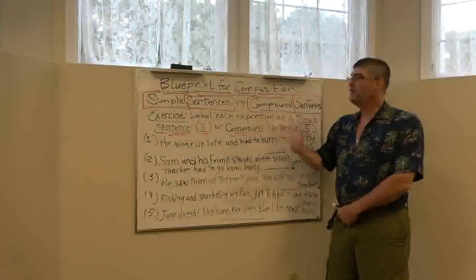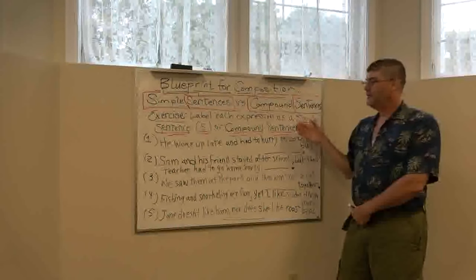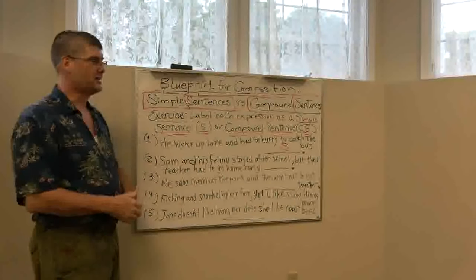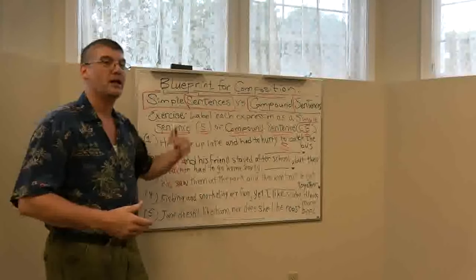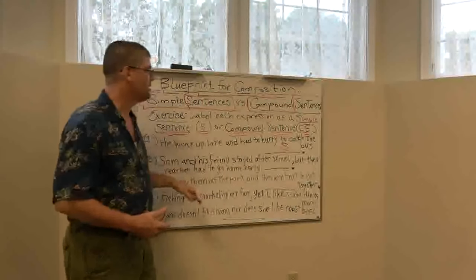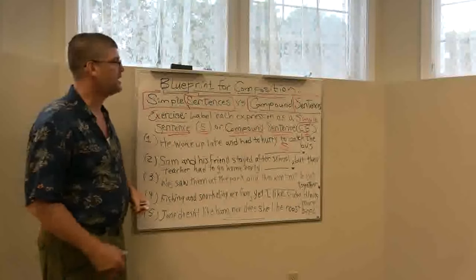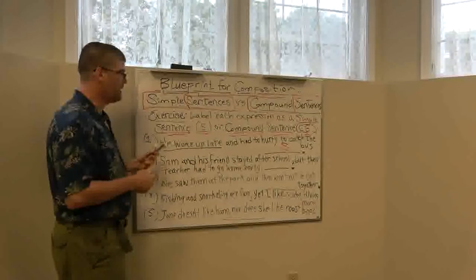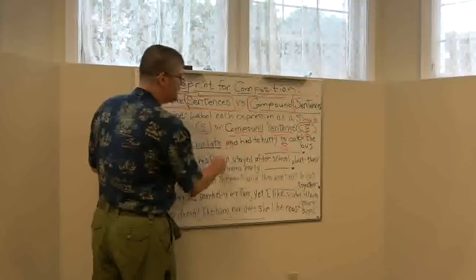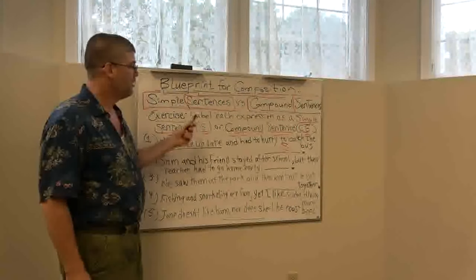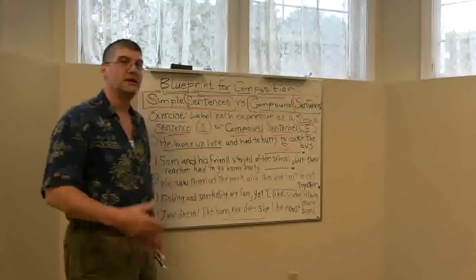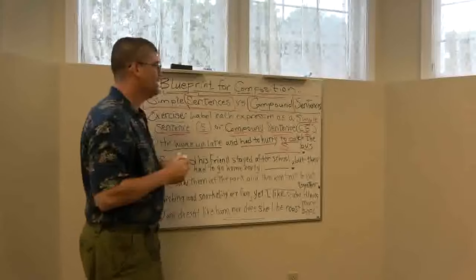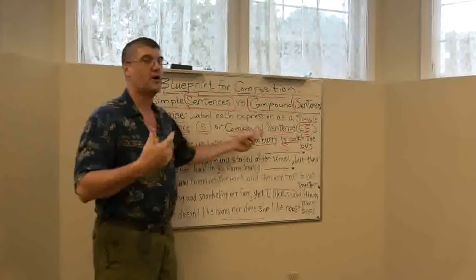If you considered this a compound sentence, that would be incorrect. This is in fact a simple sentence, so let's label that S. You might say, well, it has a conjunction right there in the middle — and didn't you say that a compound sentence has two clauses joined by a conjunction? That would be true, but that's not what we see here. We do see a beginning part — he woke up late — and a conjunction, but we have no comma. Why? Because what we have on the other side is not a clause, it's a phrase. Had to hurry to catch the bus is not a complete idea; it does not fulfill the requirements of an independent clause.